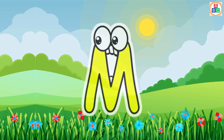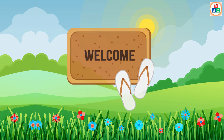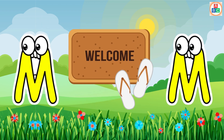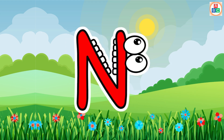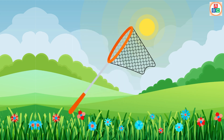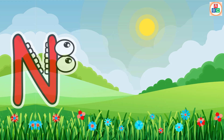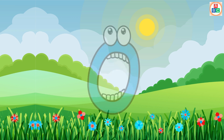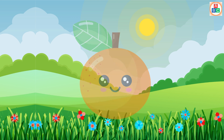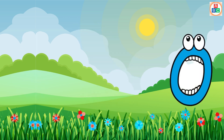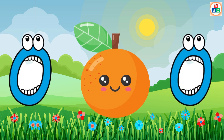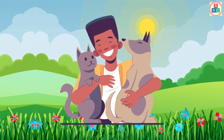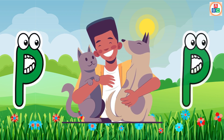M is for Mat, M-M-Mat. N is for Net, N-N-Net. O is for Orange, O-O-Orange. P is for Pet, P-P-Pet.